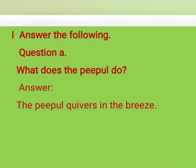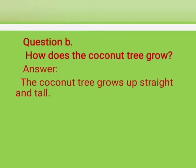First we are going to see: answer the following. Question A: What does the pupil do? Answer: the pupil was in the breeze. Question B: How does the coconut tree grow? Answer: the coconut tree grows up straight and tall.